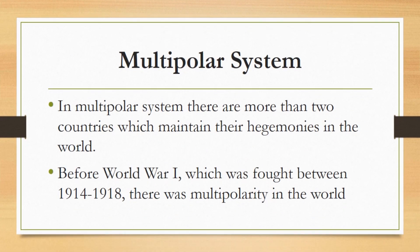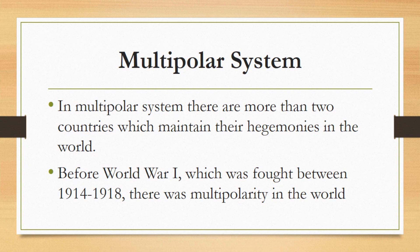The third type is the multipolar system. According to this type of world system, there are more than two countries which maintain hegemony in the world. If there are a number of great powers which have maintained their own hegemonies, then we say there is multipolarity. Before World War I, which was fought between 1914 and 1918, there was multipolarity in the world. A number of countries had maintained their hegemony at that time, all struggling to maintain their own influence.